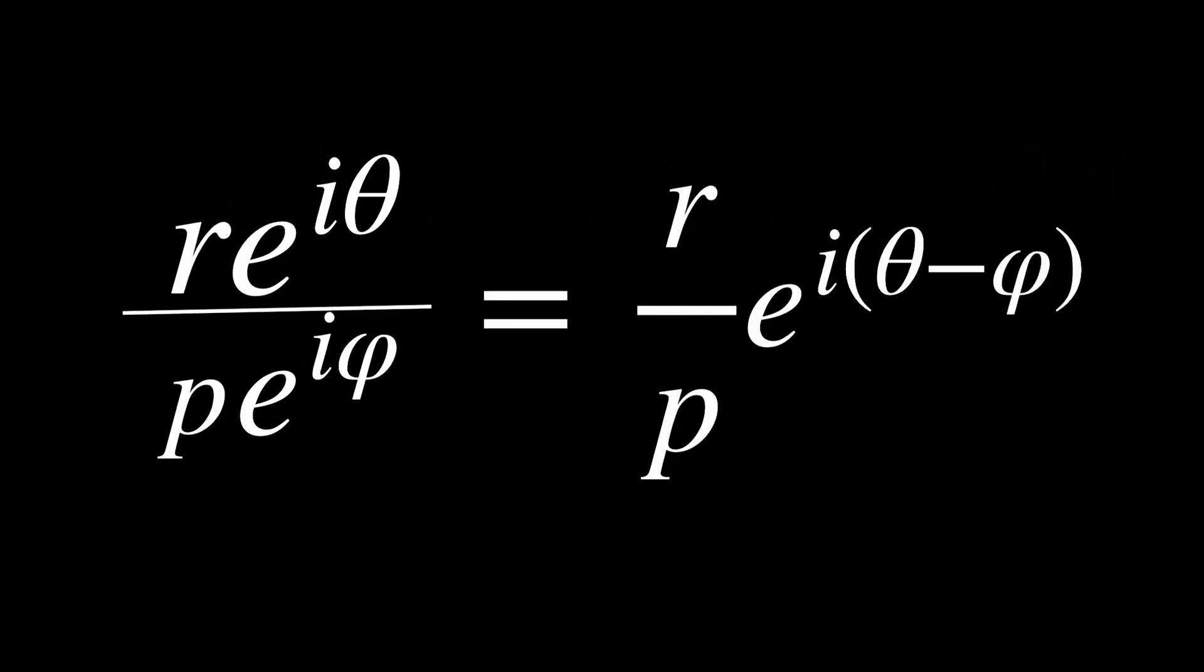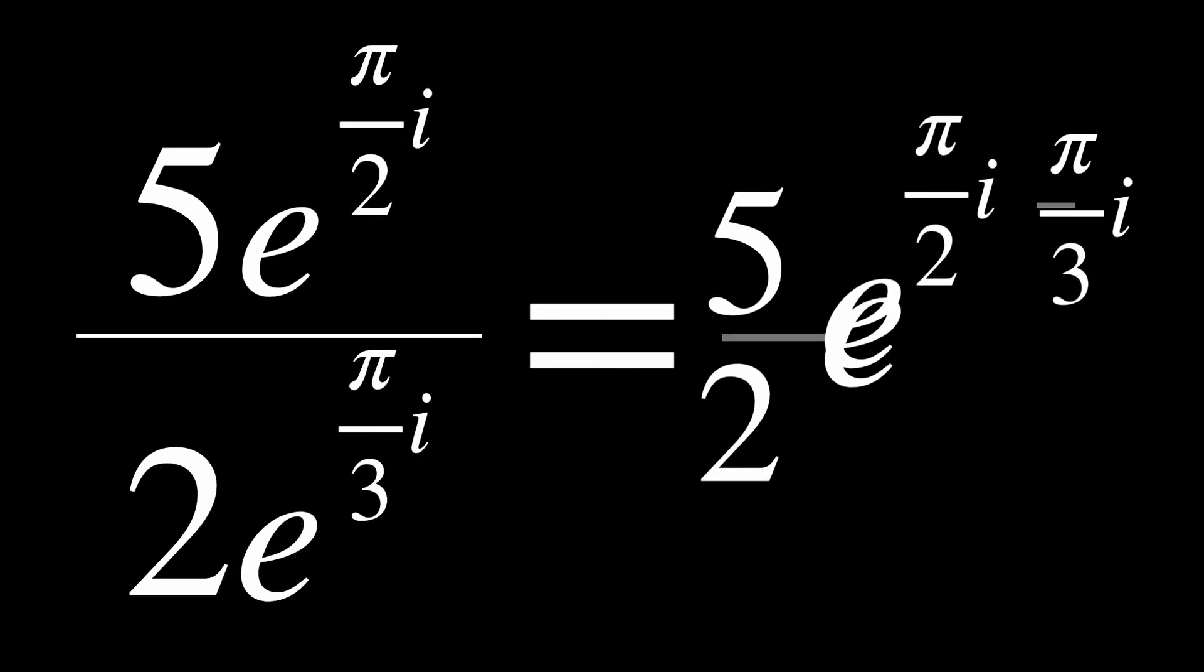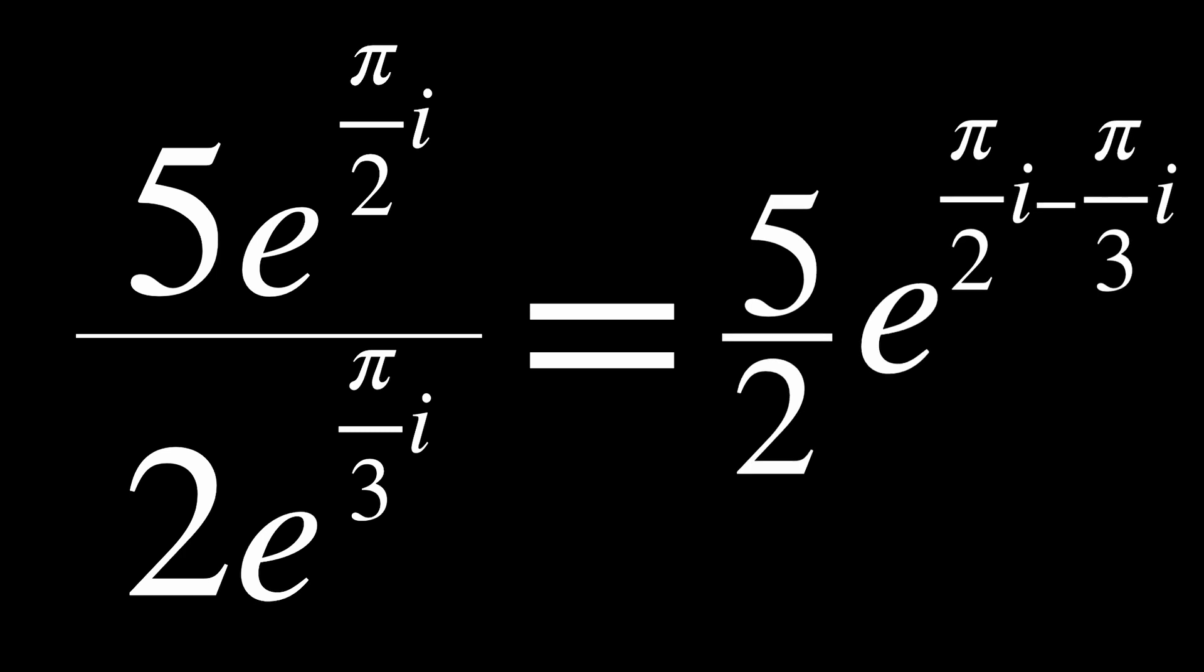Now let's move on to the polar form. You might be able to guess that since in multiplication, we add the angles and multiply the absolute values, that in division, we would subtract the angles and divide the absolute values. If you were to do this on the previous example, you would see that you get the same answer. Let's do another example in polar form. 5 times e to the i times pi over 2 divided by 2 times e to the pi over 3 times i. 5 divided by 2 is 5 over 2, and pi over 2 minus pi over 3 is equal to pi over 6. So our answer is 5 over 2 times e to the i pi over 6.